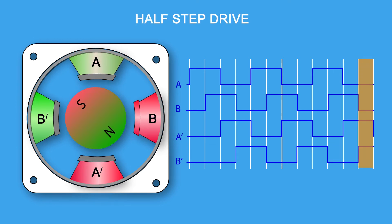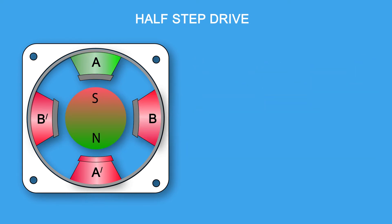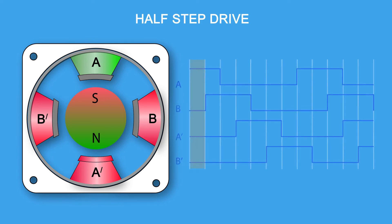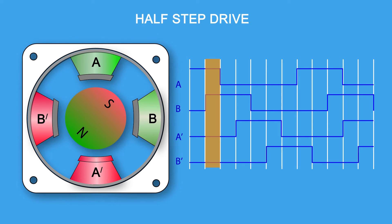Half step drive. Half step combines the two previous methods. In this case, we energize the A phase. The rotor lines up. At this point, we keep the A phase on and energize the B phase. Now, the rotor is equally attracted to both and lines up in the middle. The rotor has rotated 45 degrees, 0.9 degrees of rotor rotation in an actual motor.